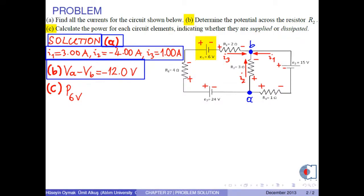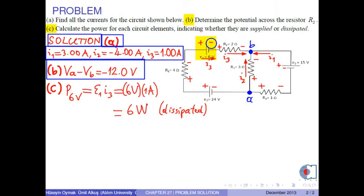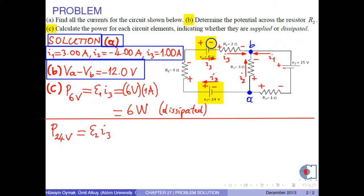The power for battery E1 is E1 times I3 = 6 watts. Because the current flows from high to low potential, this power is dissipated. For battery E2, the power is E2 times I3 = 24 watts. Since the current flows from low to high potential, it is supplied.